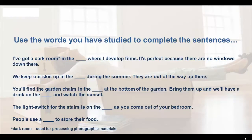Use the words you've studied to complete these sentences. I've got a dark room in the [cellar] where I develop films — it's perfect because there are no windows down there. We keep our skis up in the [loft] during the summer — they're out of the way up there. You'll find the garden chairs in the [shed] at the bottom of the garden. Bring them up and we'll have a drink on the [terrace/balcony] and watch the sun set. The light switch for the stairs is on the [landing] as you come out of the bedroom. People use a [pantry] to store their food.